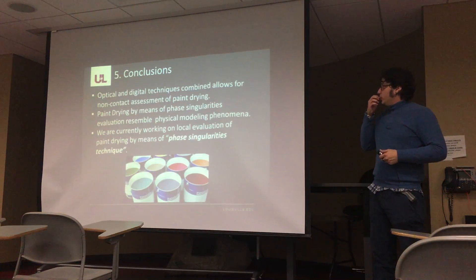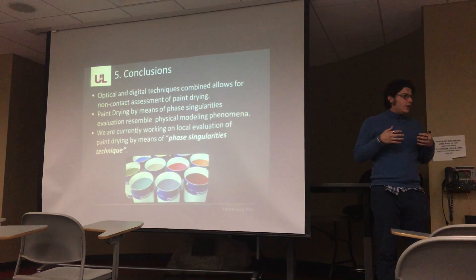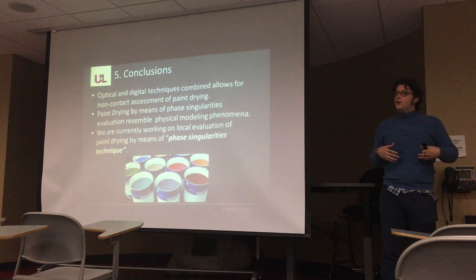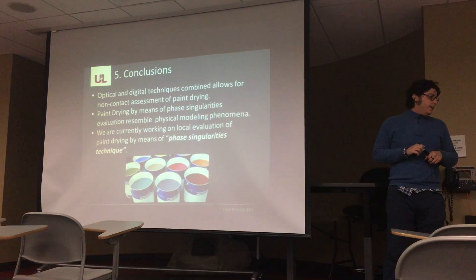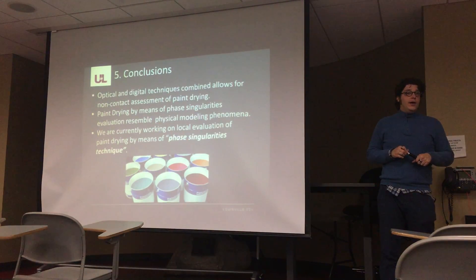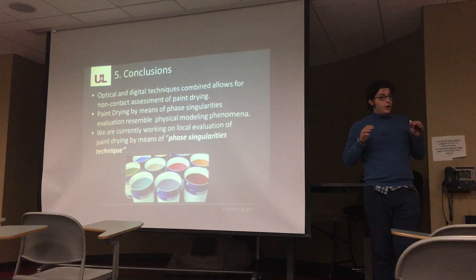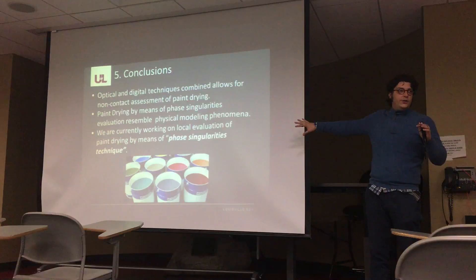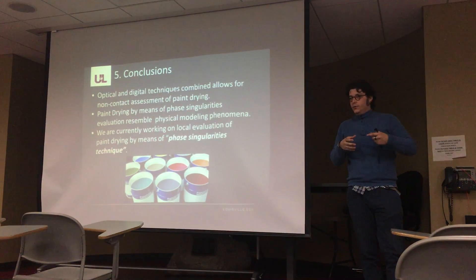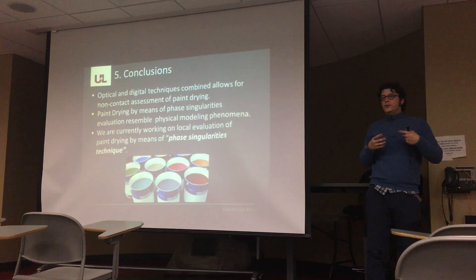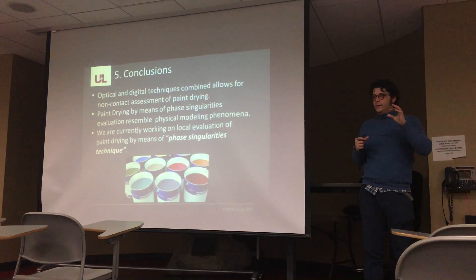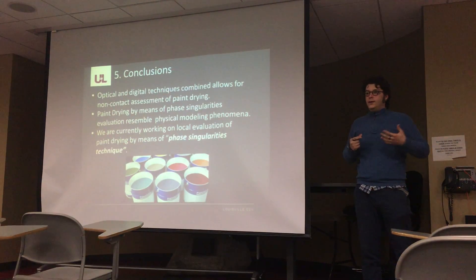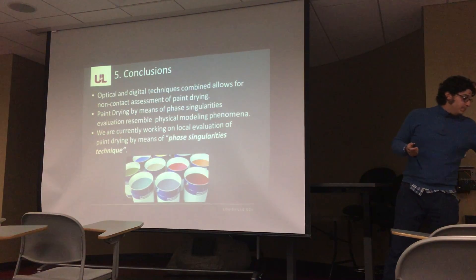In conclusion, when optical and digital techniques are combined, you can do non-contact assessment of paint drying and other applications. Paint drying by means of phase singularities is a good way of measuring the wetness of paint. We are currently evaluating this — the result presented today was for general drying over a region, but our question is: is it possible to actually measure local drying of paint? If you can do so, you can more accurately control whether the painting is drying homogeneously, or whether the pigments are well distributed over the solvent. Thank you.